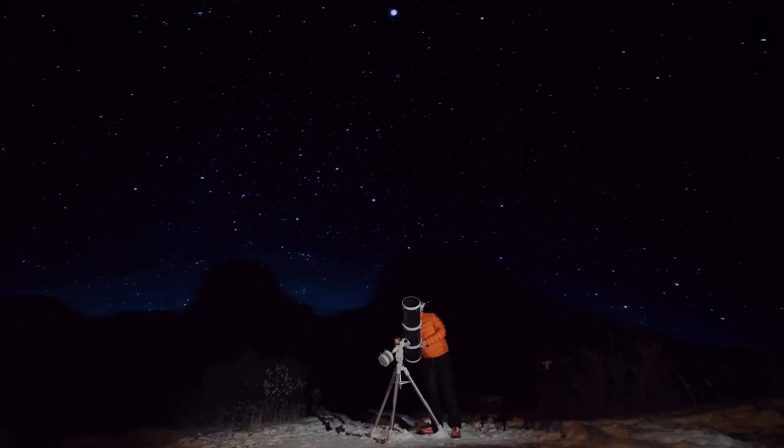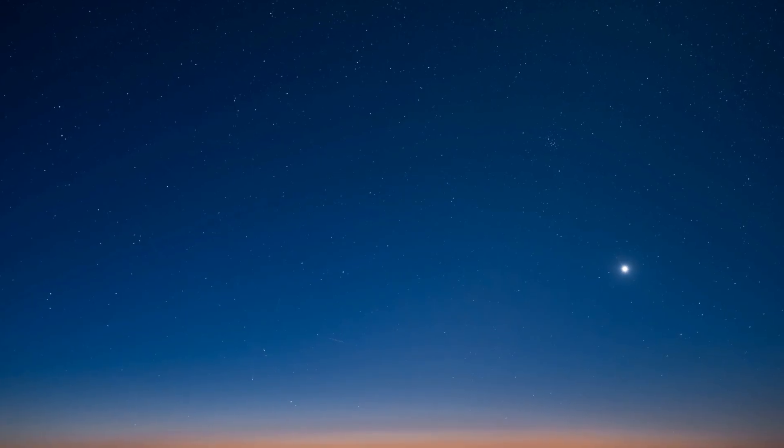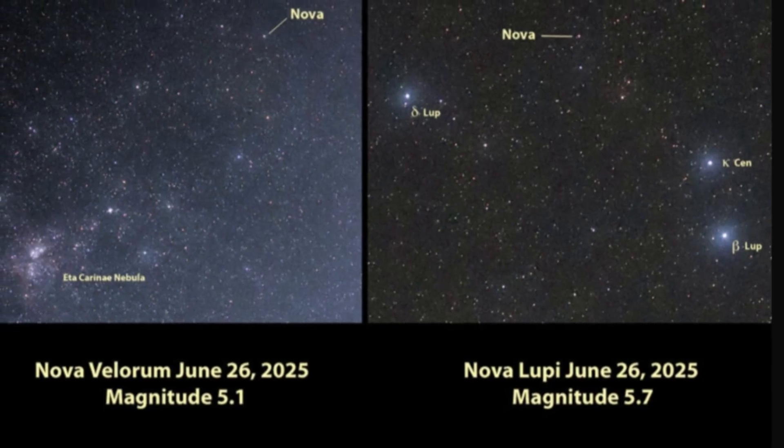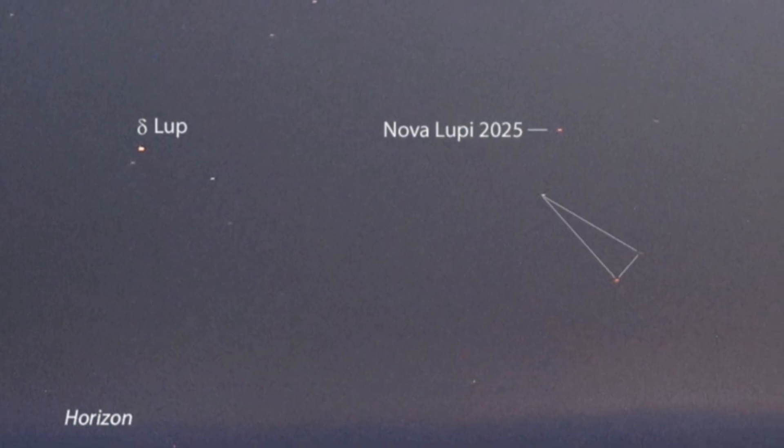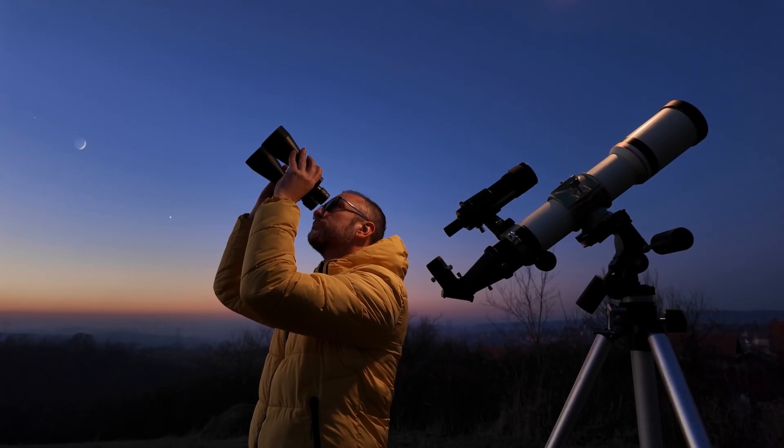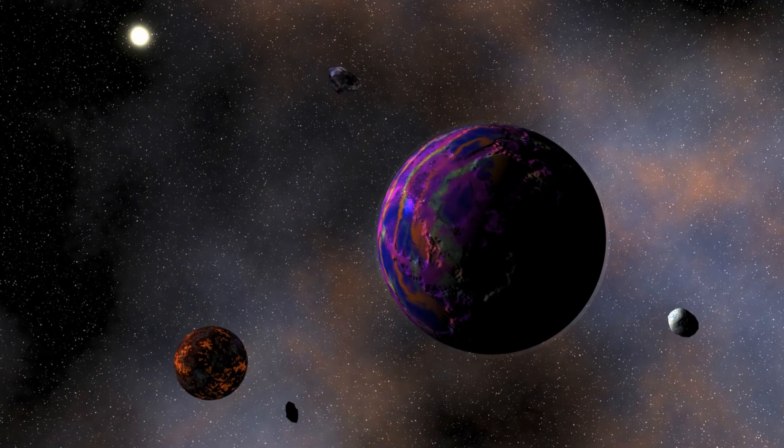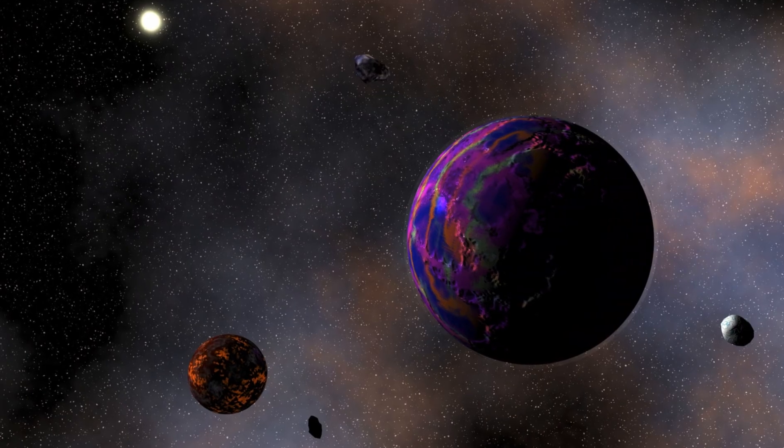You don't need a telescope to be part of this cosmic event. If you're in the southern hemisphere, find a dark spot and let your eyes adjust. Look south after sunset. V572 Valorum is in Vela, V462 Lupi in Lupus. A stargazing app or binoculars can help you spot them. Even if you miss this, the universe always has another show.